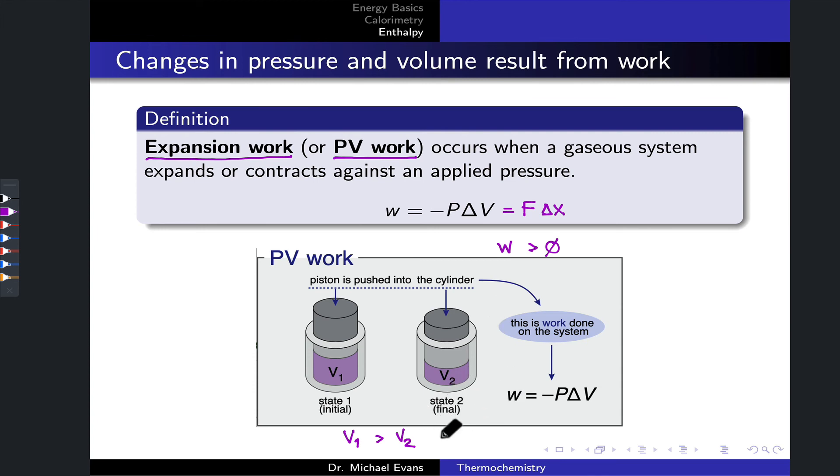Since the final volume is smaller than the initial volume, that means that delta V is less than zero. Delta V is negative. And so in calculating negative P, the pressure of course has to be positive, times delta V will end up with a positive number over here. And thus the work is positive. And so we could say that W, the work done on the gaseous system in purple here, is greater than zero.